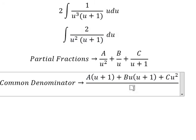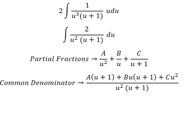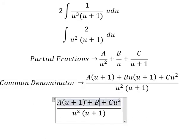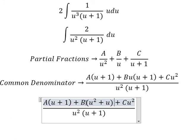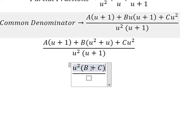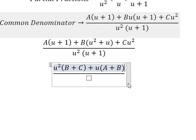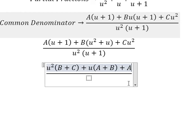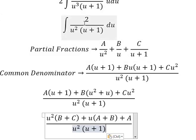Now we arrange based on the terms of u. We have u squared plus u from expansion. For u squared the coefficient is B plus C, for u the coefficient is A plus B, and the constant term gives us A. Since we don't have a u squared term or u term on the left side, B plus C equals zero, A plus B equals zero, and A equals two.